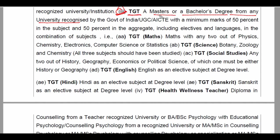TGT qualification में master और bachelor degree from any recognized university with minimum 50% marks in concern और relevant subject, including electives and languages in the combination of subjects।